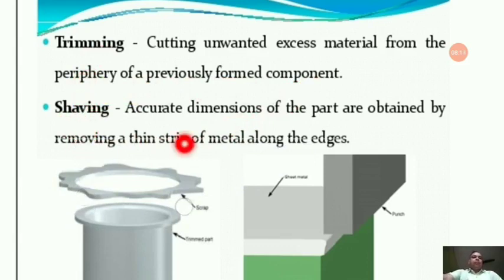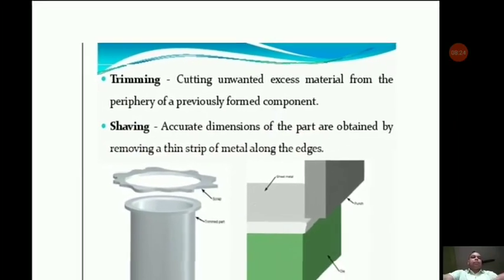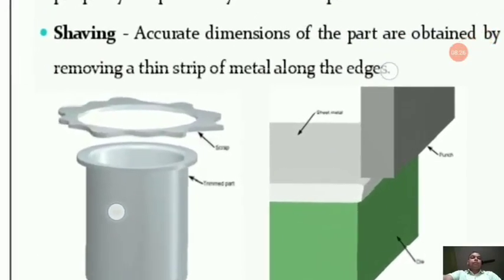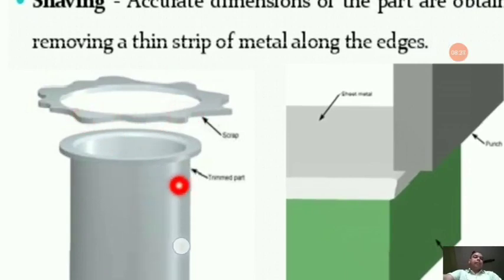Shaving is when accurate dimensions of a part are obtained by removing a thin sheet of metal along the edges. You can see in the diagram: this is the scrap and this is the trimmed portion.